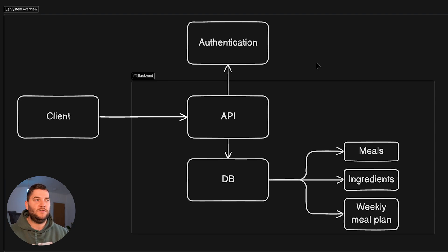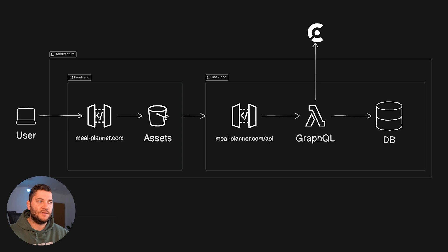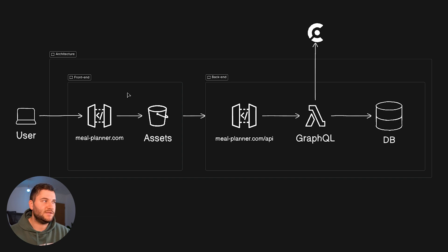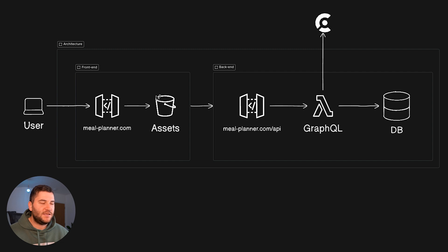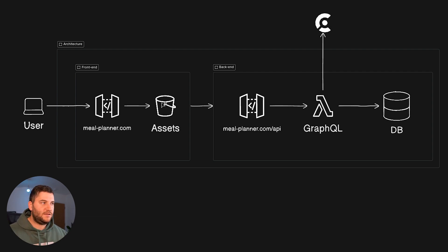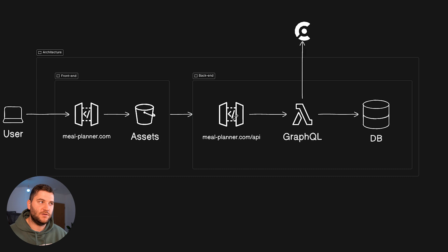Now let's go into the finer detail of the architecture. This resembles the system overview, but now we have all the different services. I've used AWS services here because that's what I have experience with, but other companies probably have the same or alternative services. We have the user visiting our website — mealplanet.com or whatever. The front-end has an API gateway, which is the gateway to our application, and this is an S3 bucket hosting all of the front-end assets like the compiled JavaScript, CSS, and HTML.